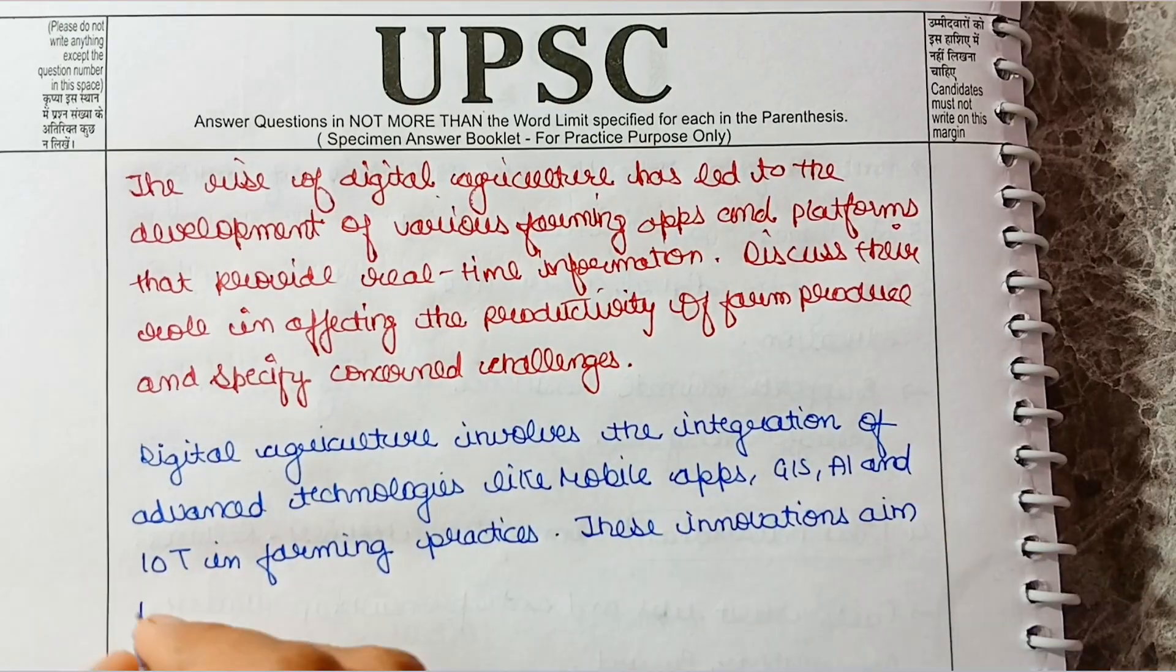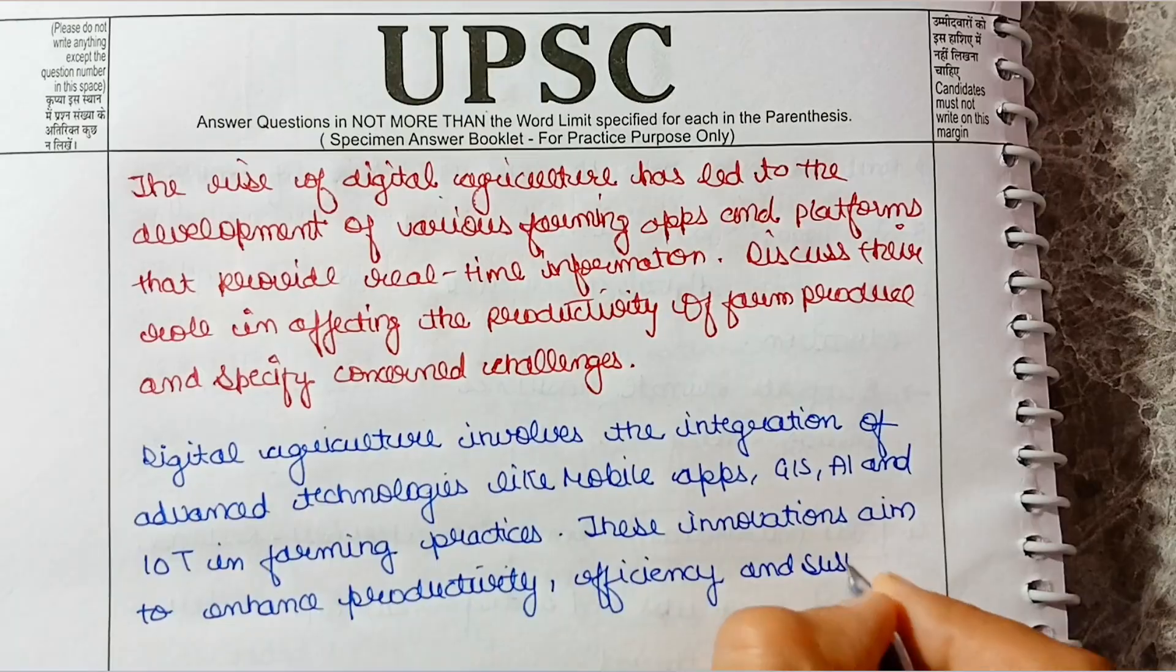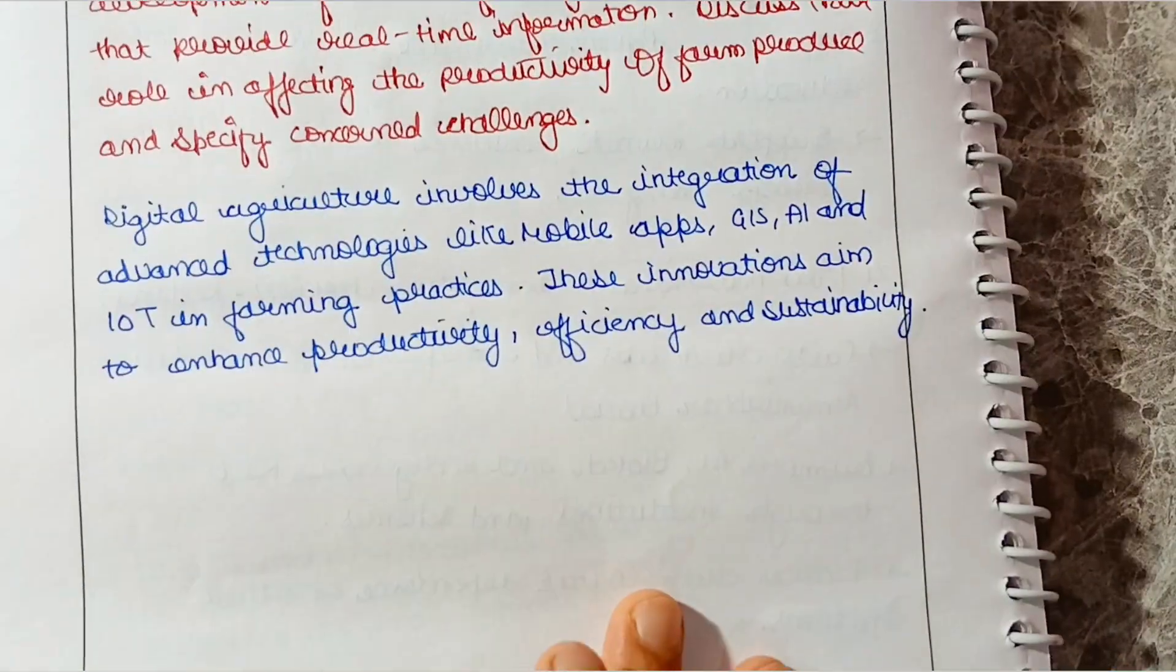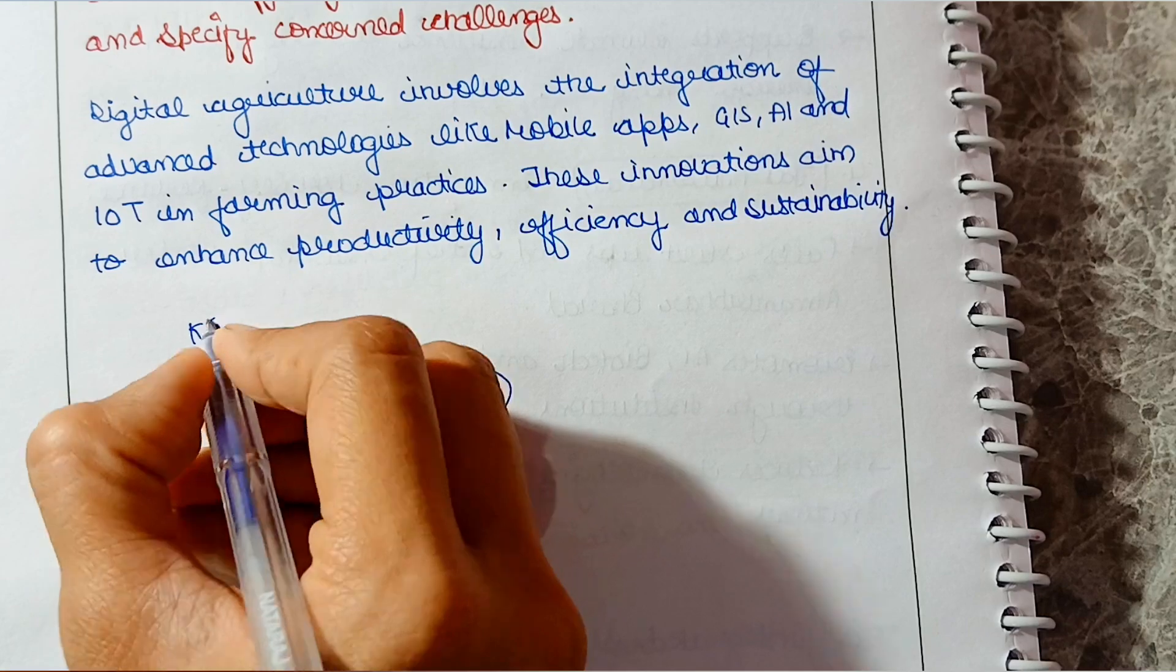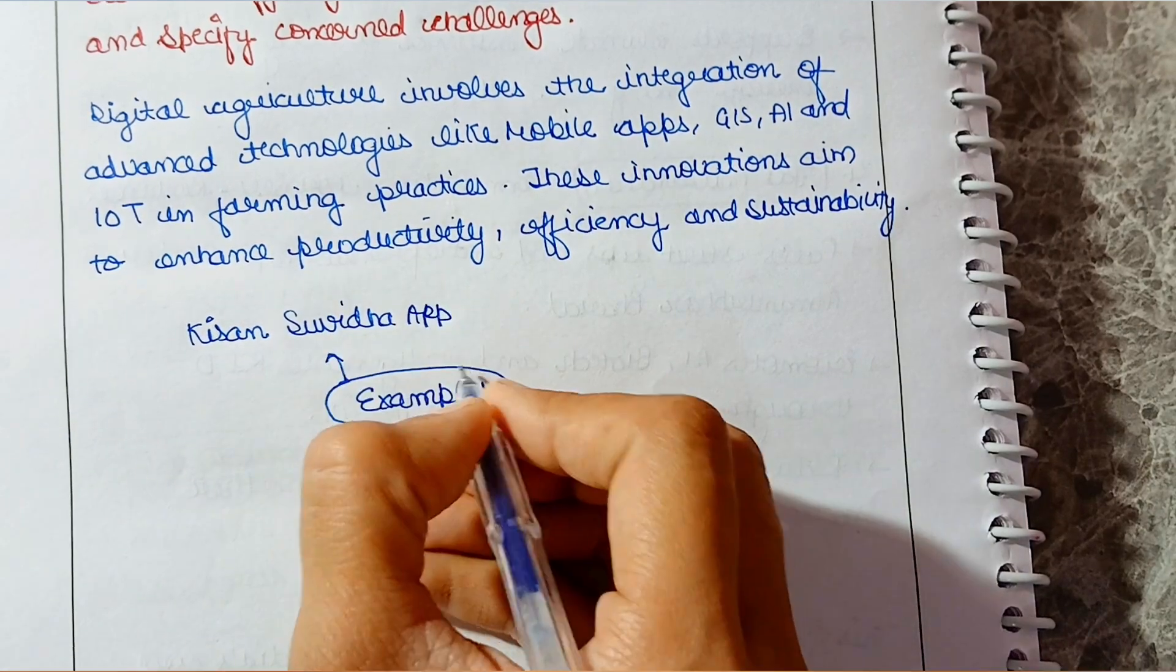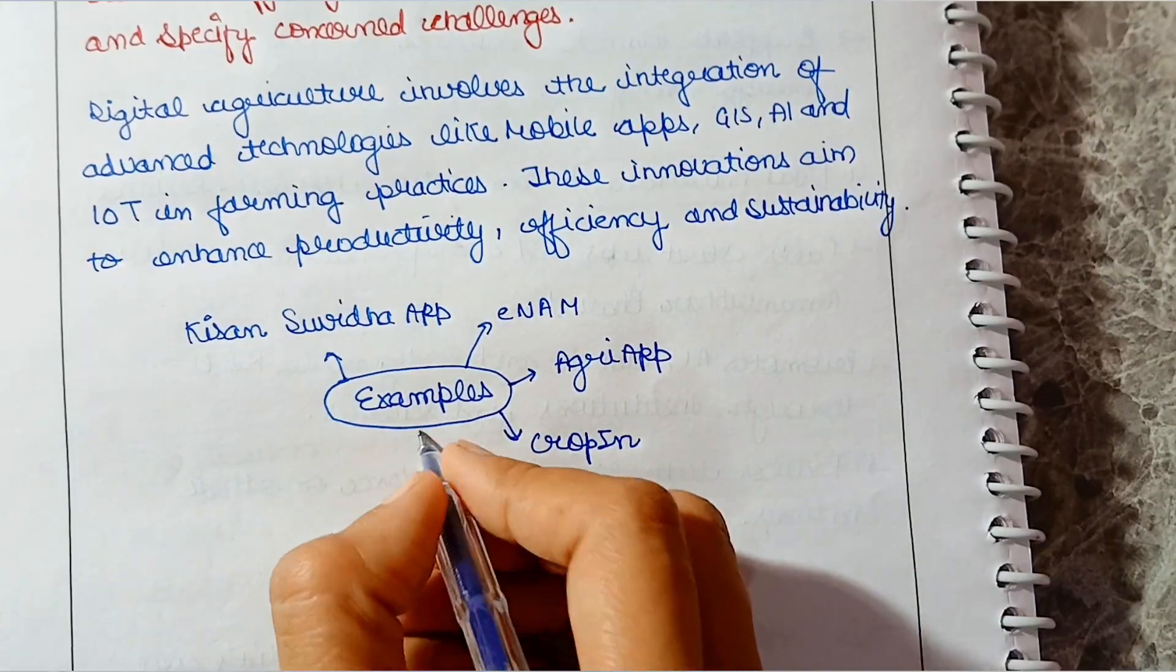So, let's write the introduction first. Digital agriculture involves the integration of advanced technologies like mobile apps, GIS, AI and IoT in farming practices. These innovations aim to enhance productivity, efficiency and sustainability.